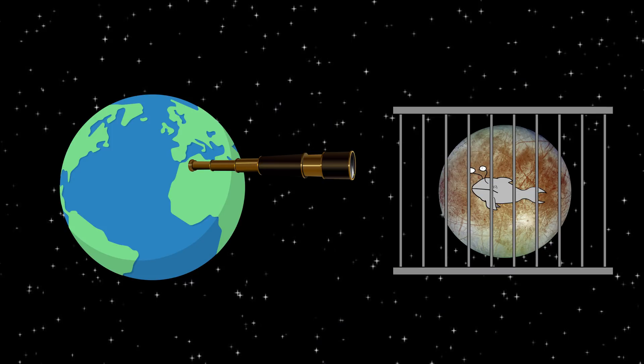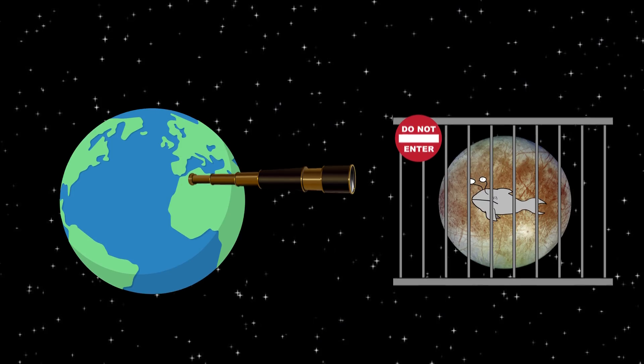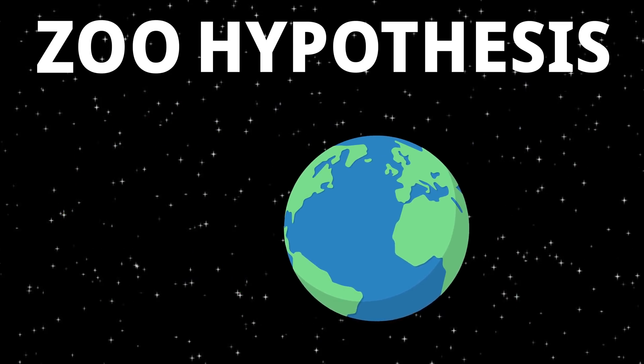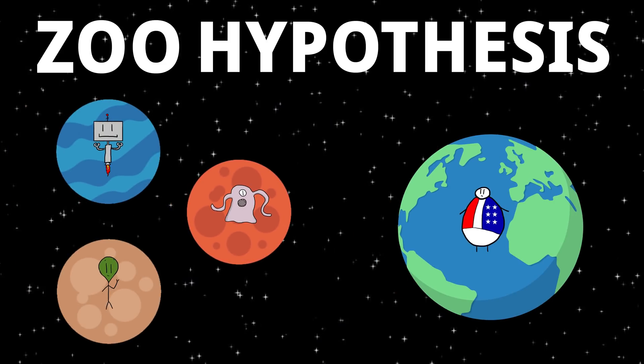Studying from afar would give us valuable insights into the development of intelligent life, and it would be needlessly risky to interfere directly. This idea is called the Zoo Hypothesis, and it hinges on the fact that other intelligent life would be aware of our existence but unwilling to make their presence known for fear of disturbing our natural progress as a species.